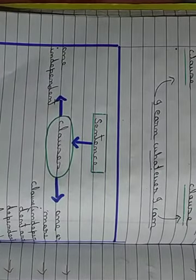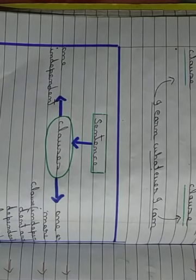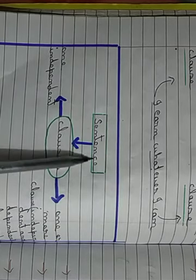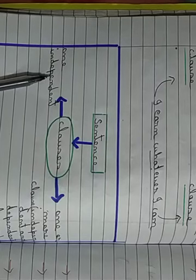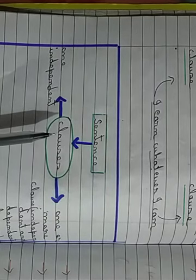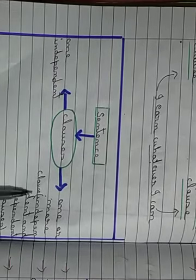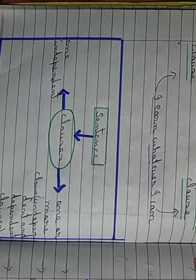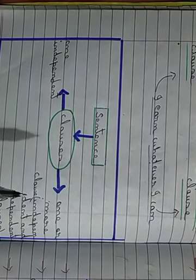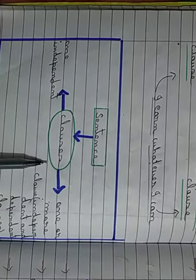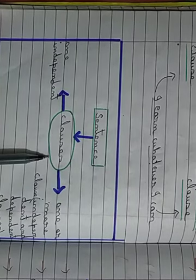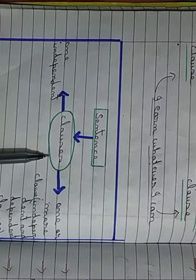Now, what do you understand by sentences? Sentences are made up of clauses. A sentence may consist of one independent clause, or it may consist of one or more clauses which may be a collection of independent and dependent clauses. Based on this criteria, we have three types of sentences based on structure: simple sentence, compound sentence, and complex sentence.